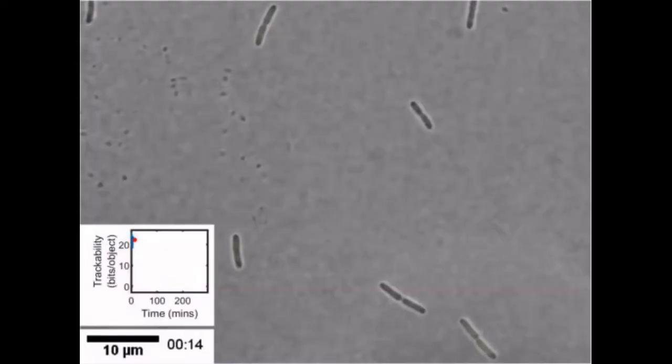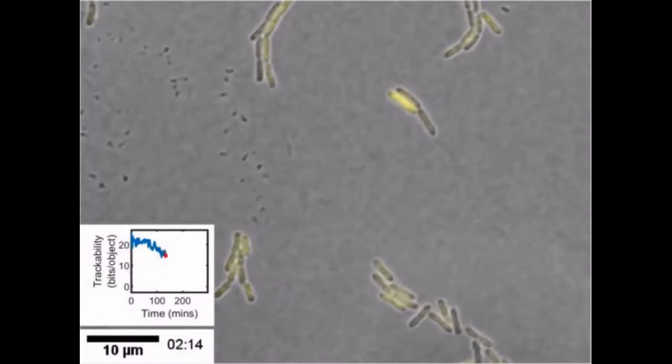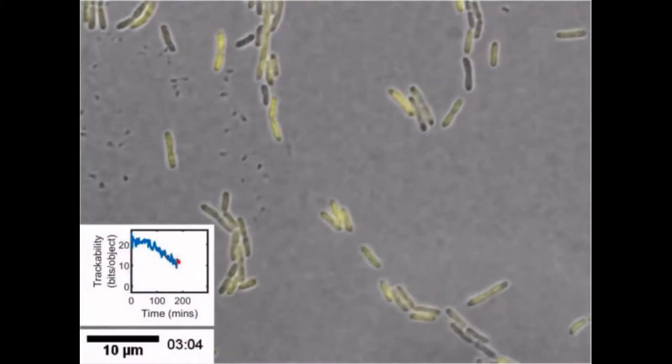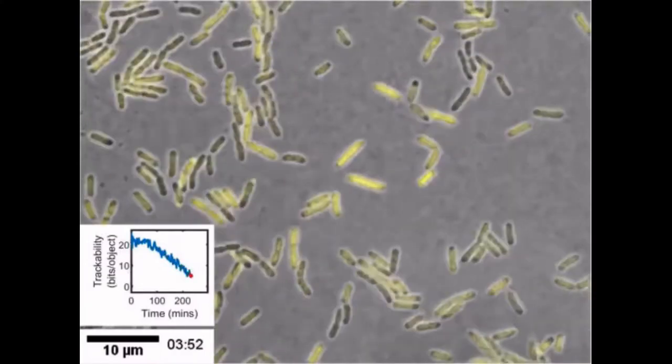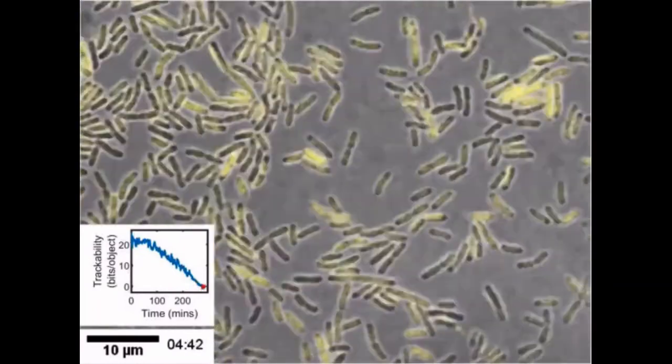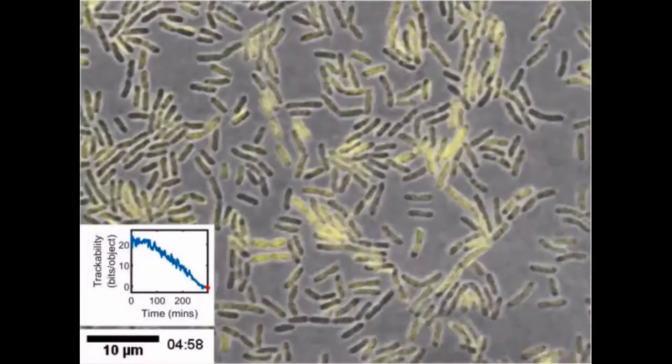A corollary of our approach is the trackability score, a measure of the amount of information available in each frame for assigning links between objects. This metric can be used to figure out which parts of a dataset are effectively impossible to track, or to automatically detect acquisition problems such as unexpected changes in focus.